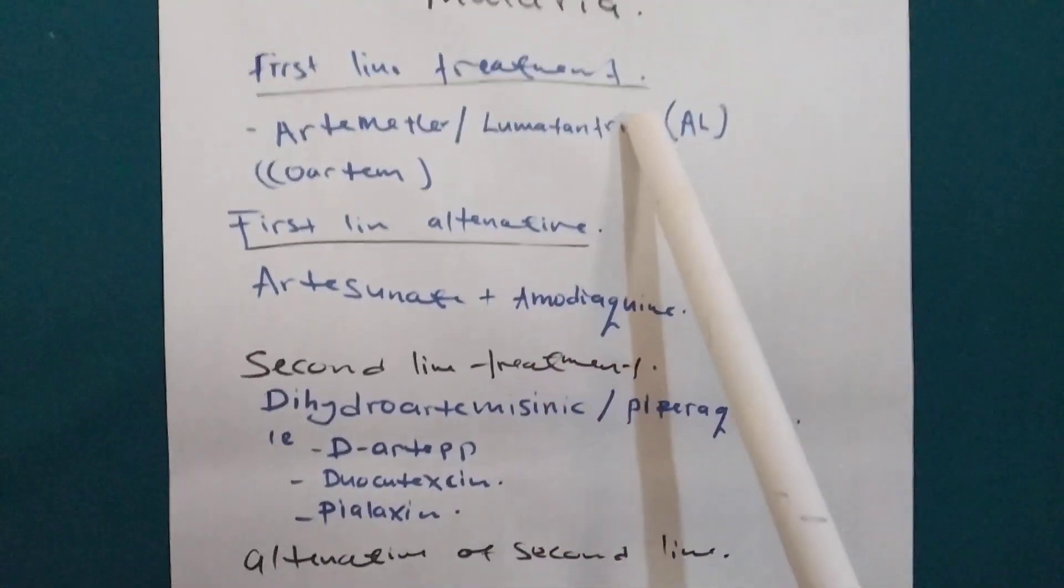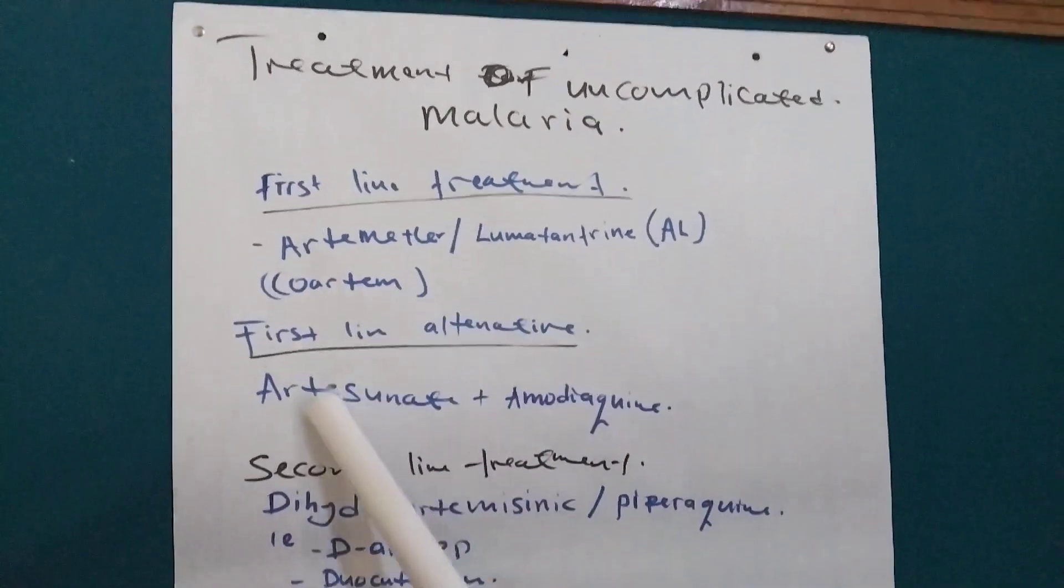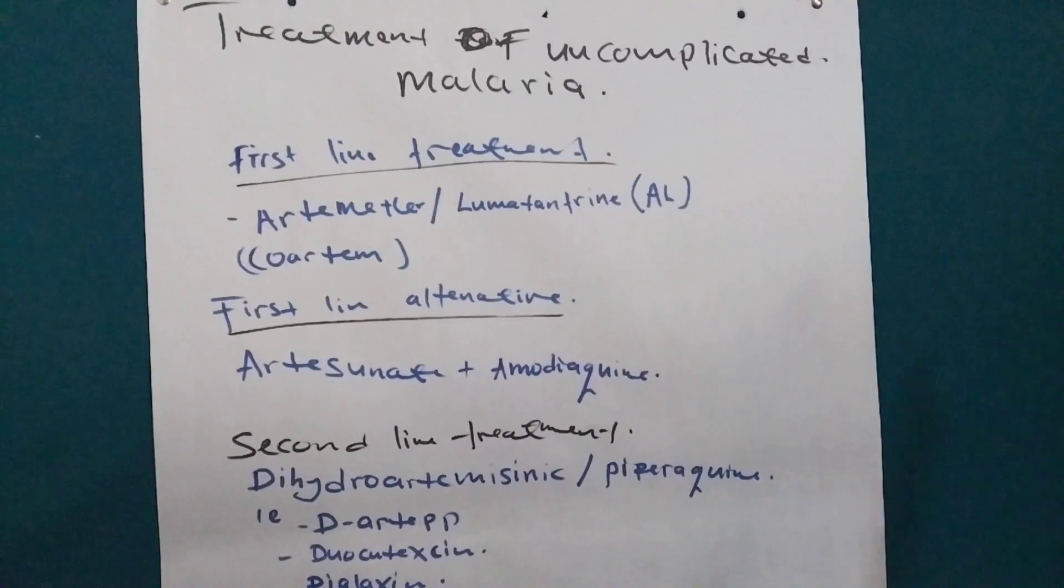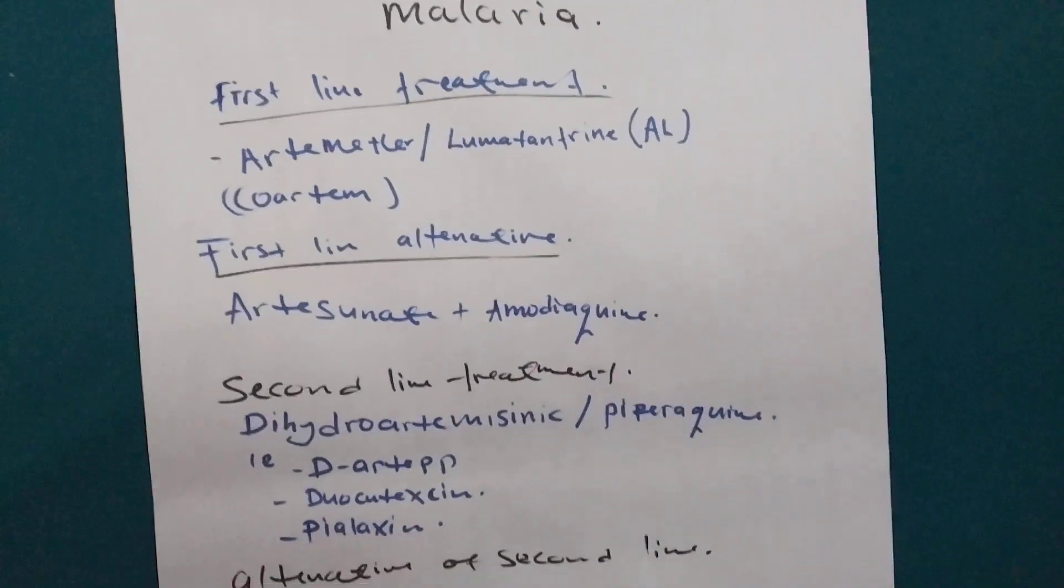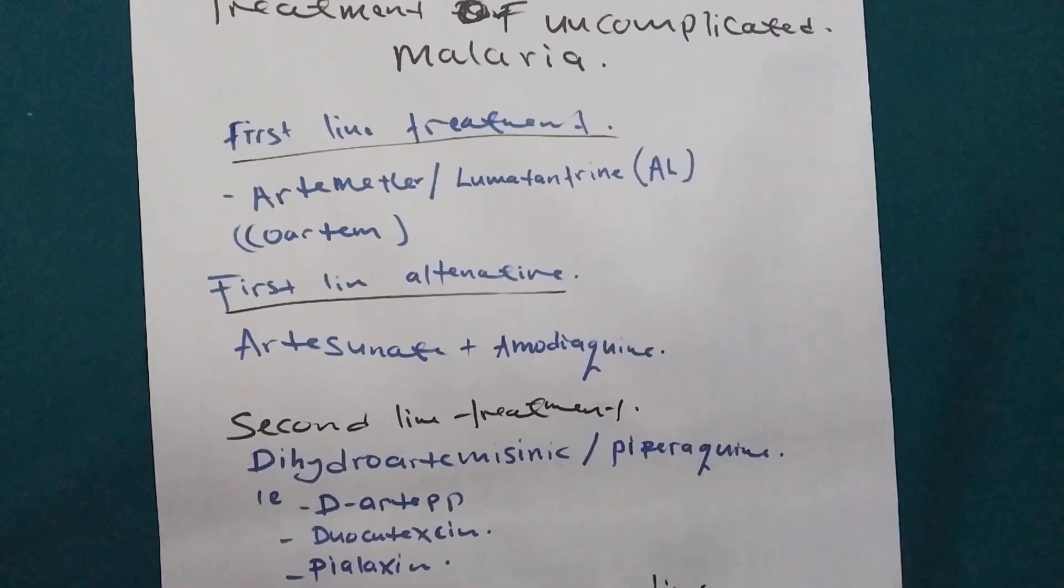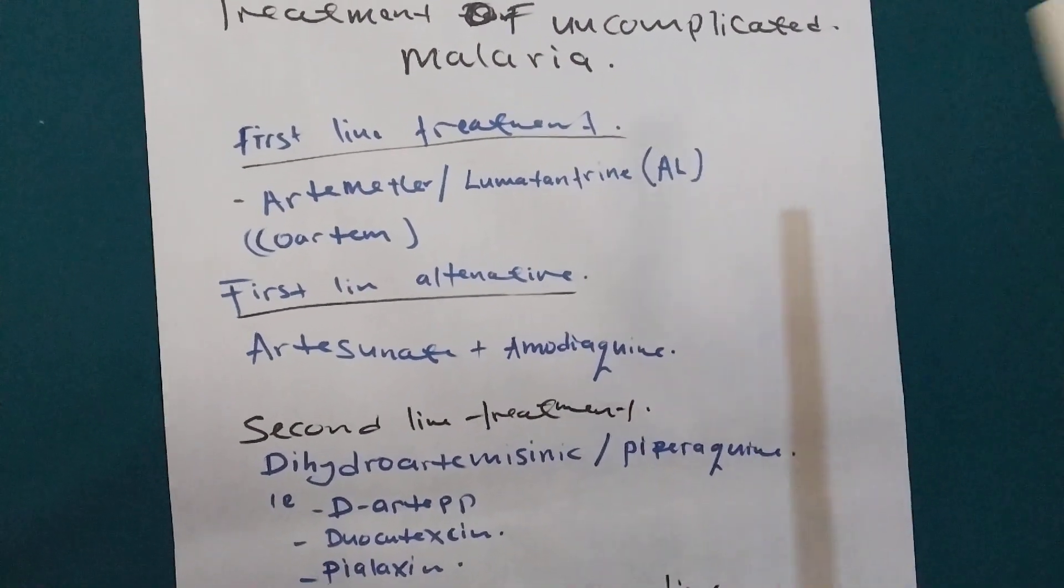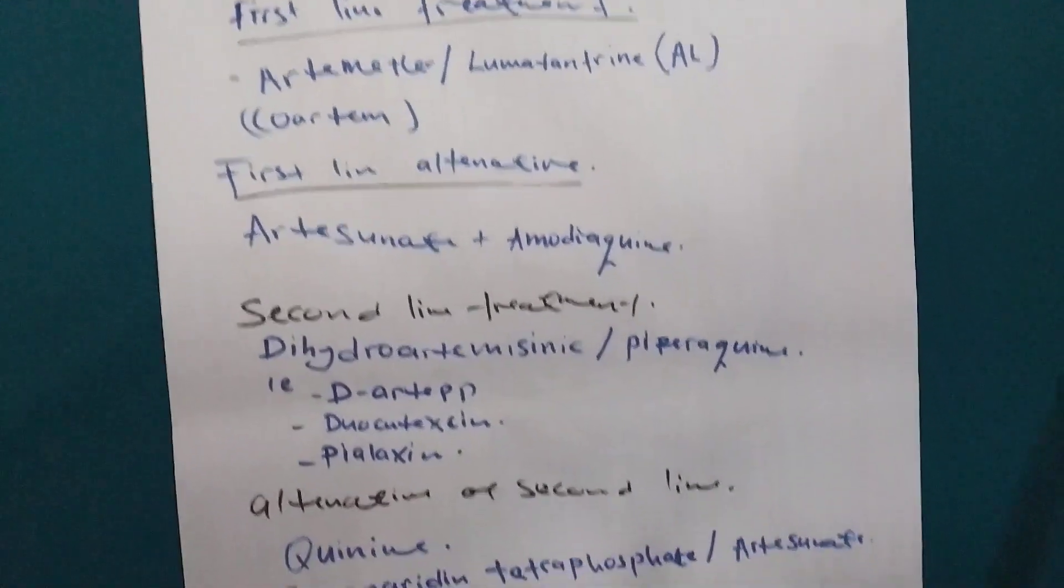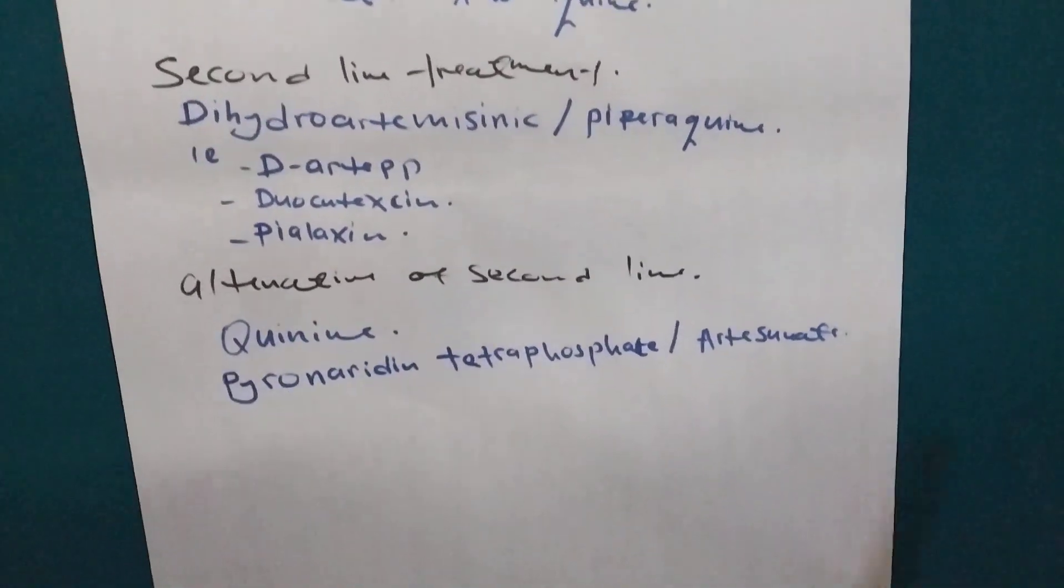Even the first line treatment alternative, you can use this if Coartem is not there. So these are the treatments of uncomplicated malaria, first line and second line treatment. Thank you for watching and see you in the next one.